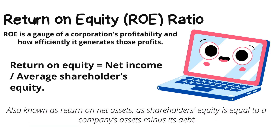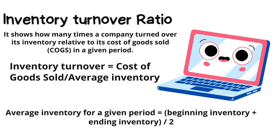Another interesting ratio is the inventory turnover ratio. This ratio shows how many times a company turned over its inventory in a given period of time with respect to cost of goods sold. For example, consider a company that has sold 40 crores of goods in a year while the average inventory for the year is 4 crores. In this case, the inventory turnover ratio will be 10, meaning the company was able to clear its inventory 10 times in a year, or once every 36 days.